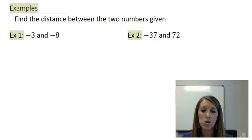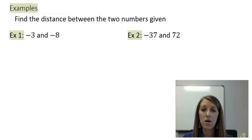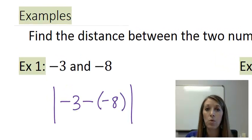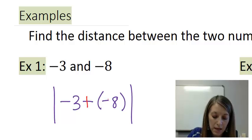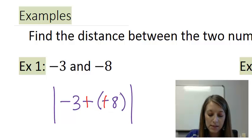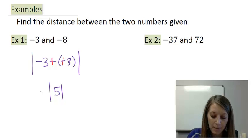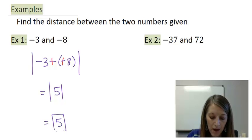In these two examples we're finding the distance between two numbers on the number line without drawing the number line. I suggest you pause the video and try these on your own. Example one: write the absolute value of one number minus the other — it doesn't matter which order. The double negatives cancel, giving negative 3 plus 8, or mentally 8 minus 3, which gives 5. Taking the absolute value of 5 gives positive 5, so the two numbers are 5 units apart.